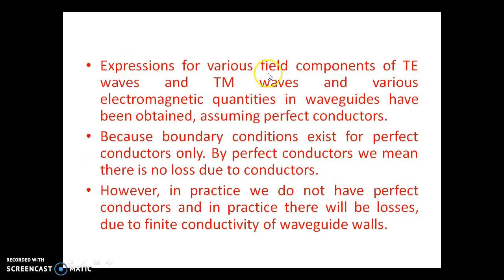Expressions for various field components of TE waves and TM waves and various electromagnetic quantities in waveguides have been obtained assuming perfect conductors. Because boundary conditions exist for perfect conductors only. By perfect conductors we mean there is no loss due to conductors.